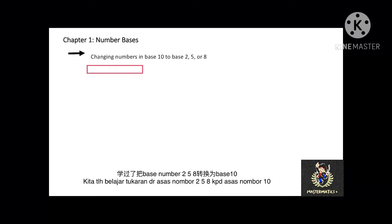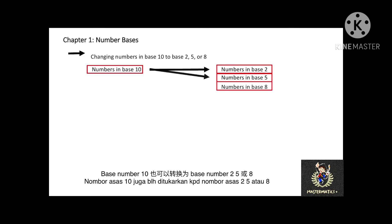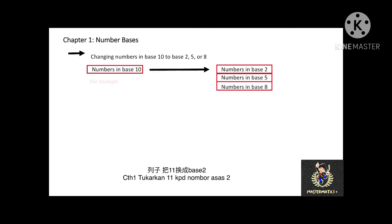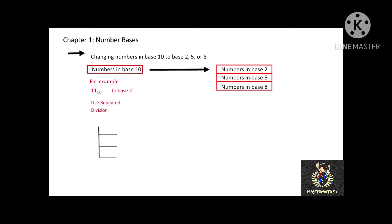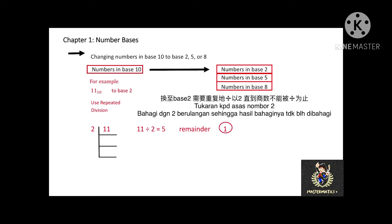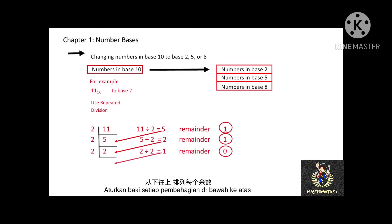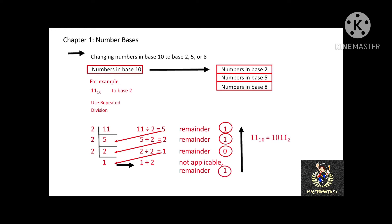We have learned changing base numbers from 2, 5, and 8 to base 10. Now, base 10 can also be changed into base 2, 5, or 8. For example, 11 base 10 converted to base 2. When changing a number in base 10 to base 2, base 5, or base 8, we use the method of repeated division. The 11 base 10 will be divided by 2 repeatedly until the quotient can no longer be divided. From the repeated division, list down the remainder on one side. Then rearrange the remainders from bottom to top to get the number in base 2, which is 1011 base 2.